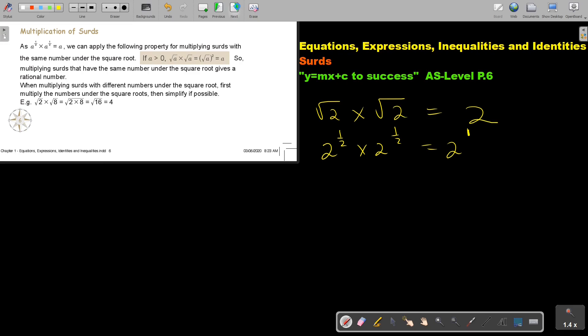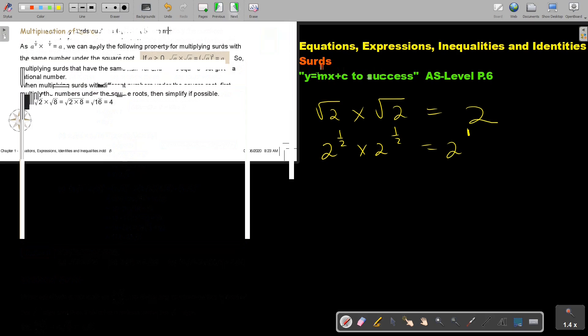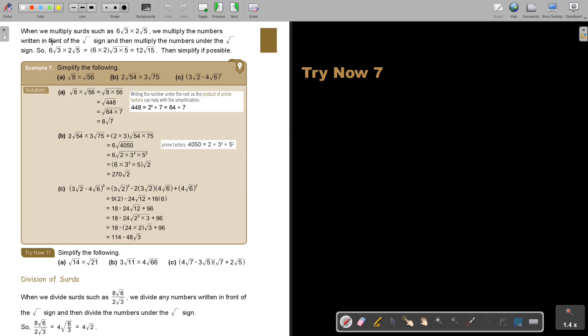When we multiply surds like this we multiply the numbers written in front of the root sign and then multiply the numbers under the root sign. So 6 times 2 that will be 12 and then 3 times 5 will be inside the square root, 15. Then if it can simplify we will simplify it.